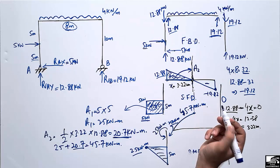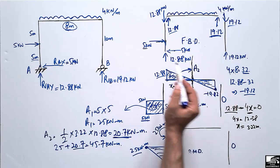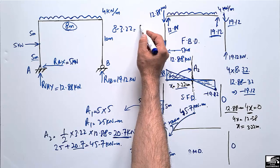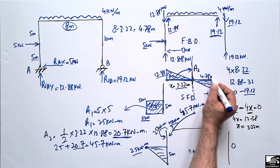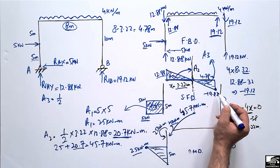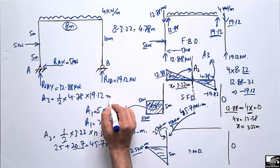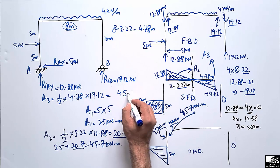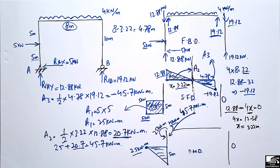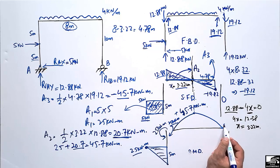The remaining length of the beam beyond x = 3.22 m is 8 − 3.22 = 4.78 meters. The area of the negative triangle A3 = ½ × 4.78 × 19.12 = 45.7 kNm. Since this is a negative triangle, it gives −45.7 kNm, which exactly cancels the +45.7 kNm, confirming the bending moment is zero at the right support — as expected.